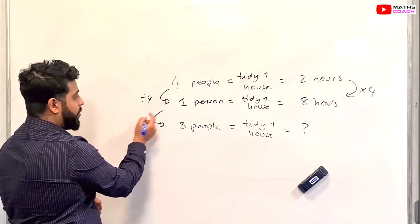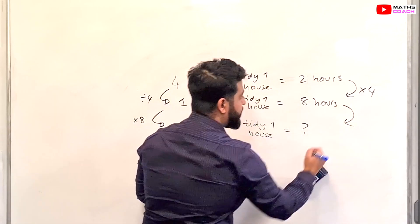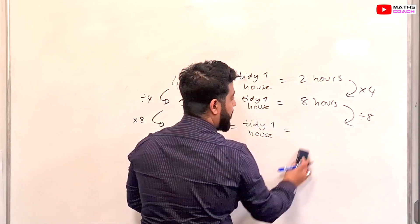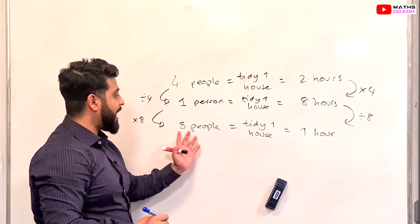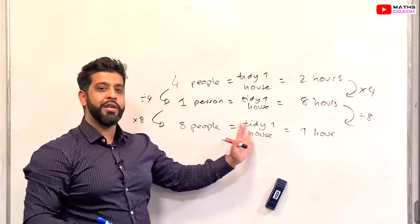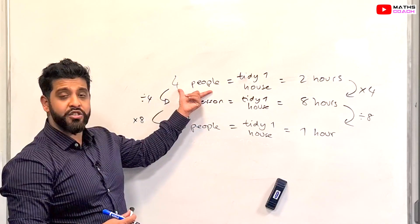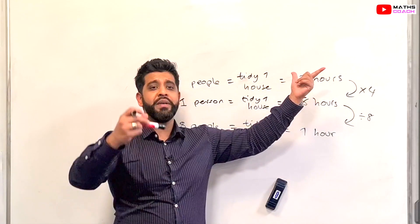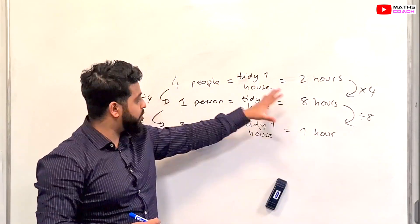Now, to get from 1 person to 8 people we multiply by 8, so on the other side we do the opposite — we divide by 8: 8 divided by 8 equals 1 hour. So it takes 8 people 1 hour to tidy that same house. You could also spot this directly: doubling the number of people halves the time, so 4 people taking 2 hours means 8 people take 1 hour.